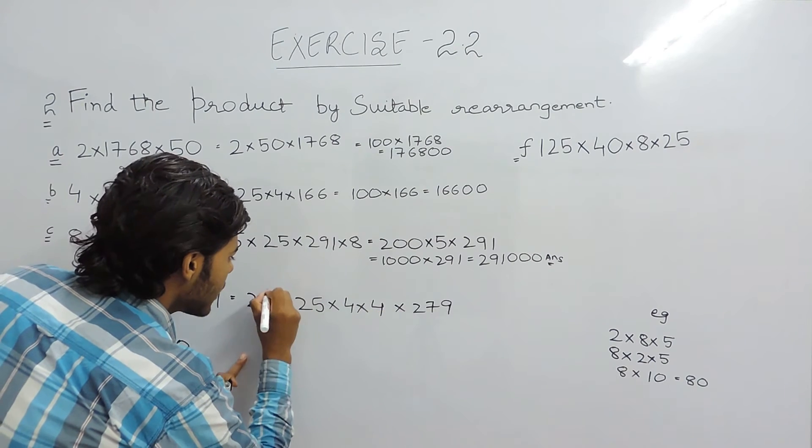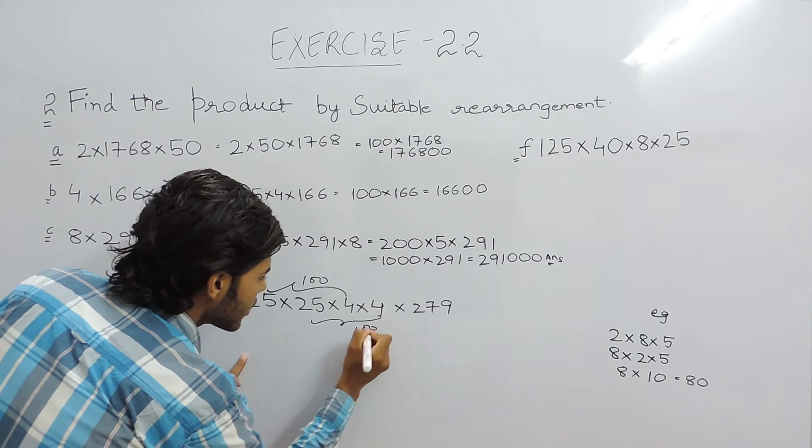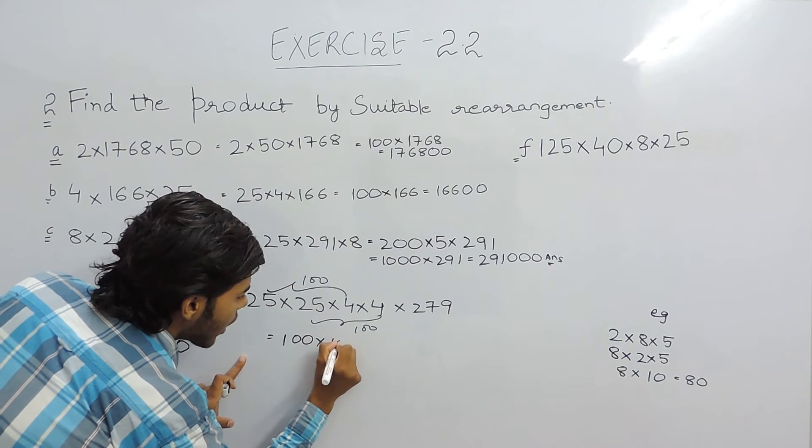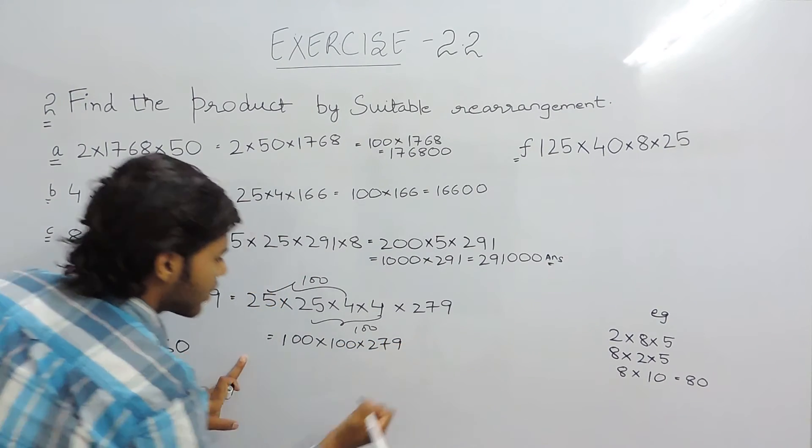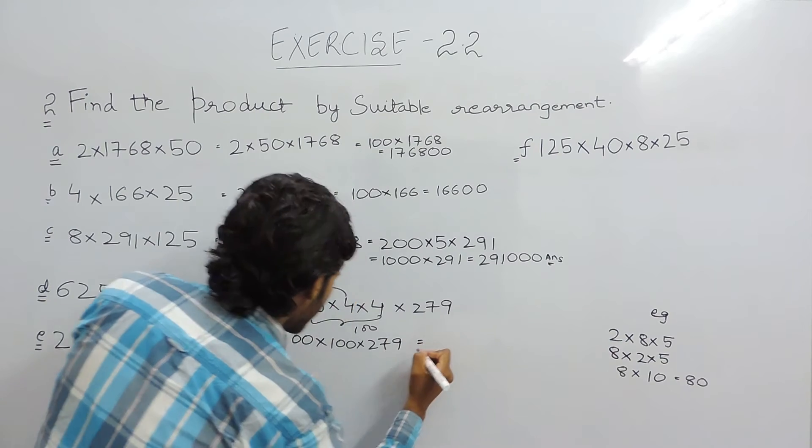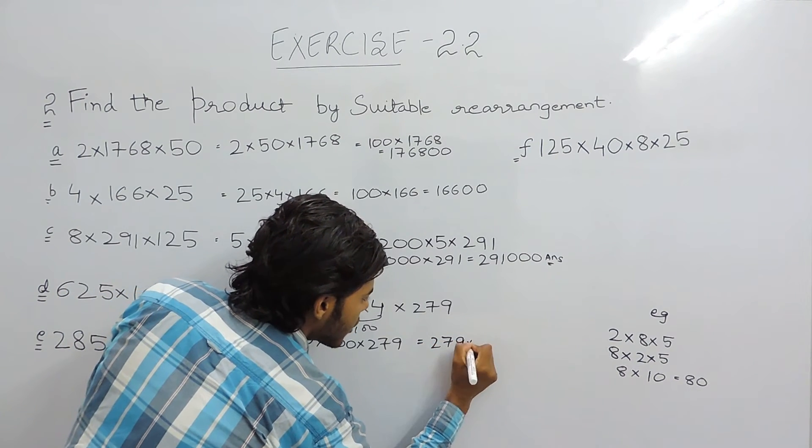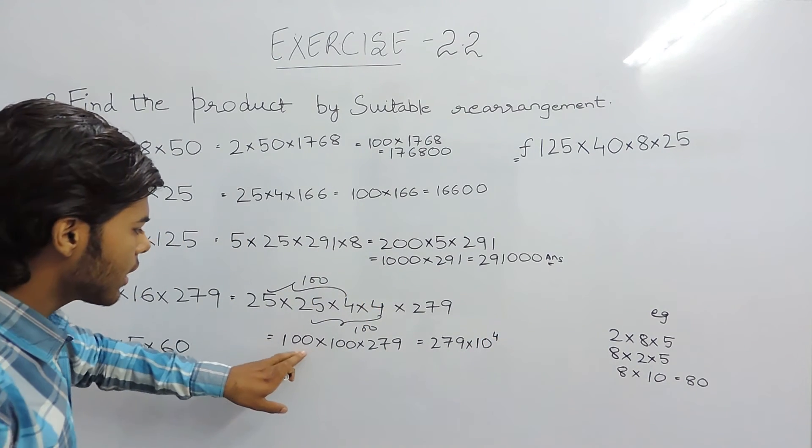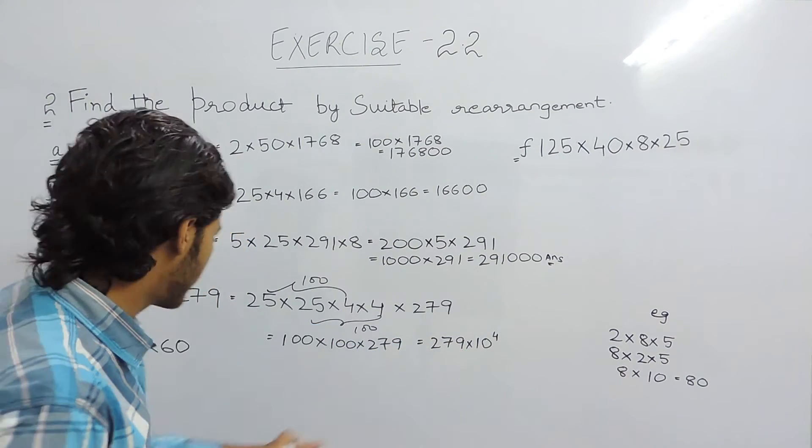So as we all know 25 four's are 100. These two will make 100 and these two will make another 100. So this will be 100 into 100 into 279 which will give you 279 into 10 to the power 4. Because it is containing 4 zeros. So 10 to the power 4.